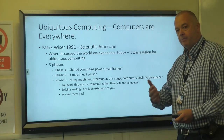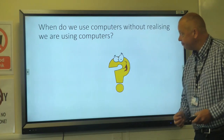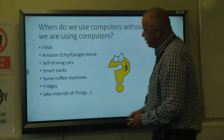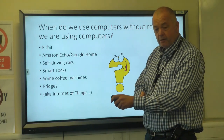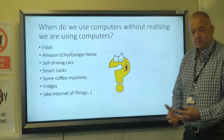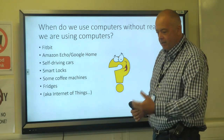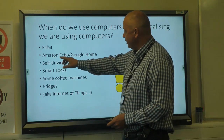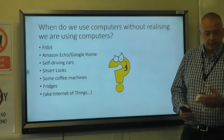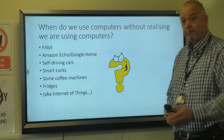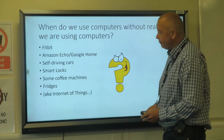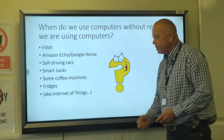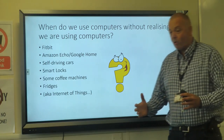Here are some examples of using a computer without realising it. The Fitbit on your wrist has its own operating system — it tracks your heart rate, exertion, steps, and location. Your Amazon Echo or Google Home: you say 'Alexa, send me a reminder' and there's computing power both inside the device and in the cloud it taps into.